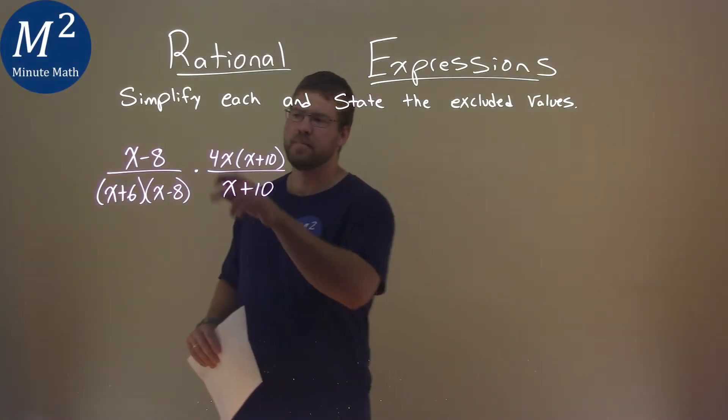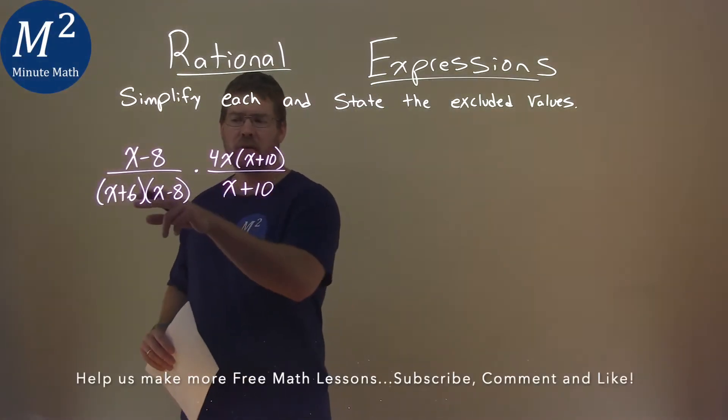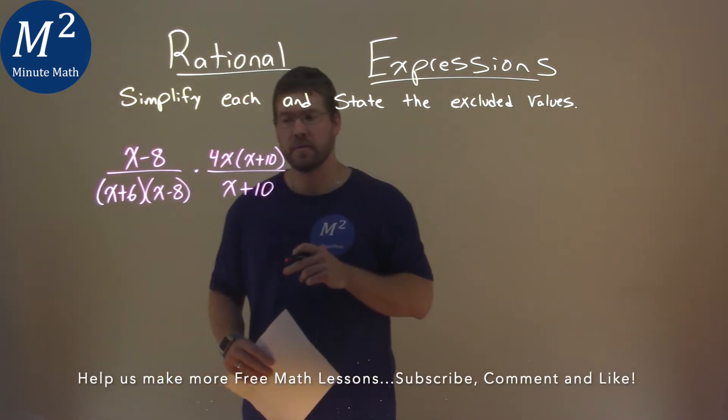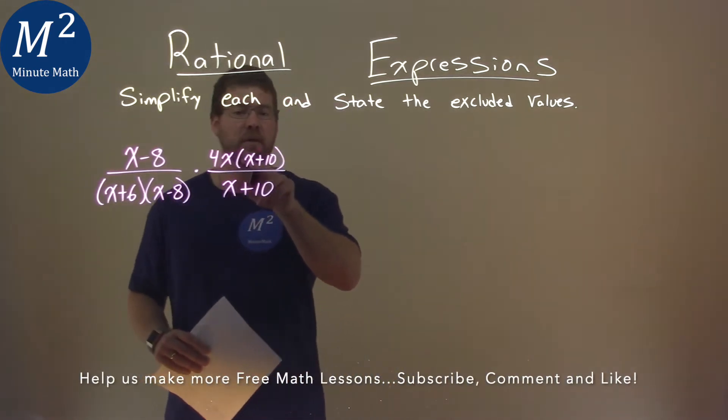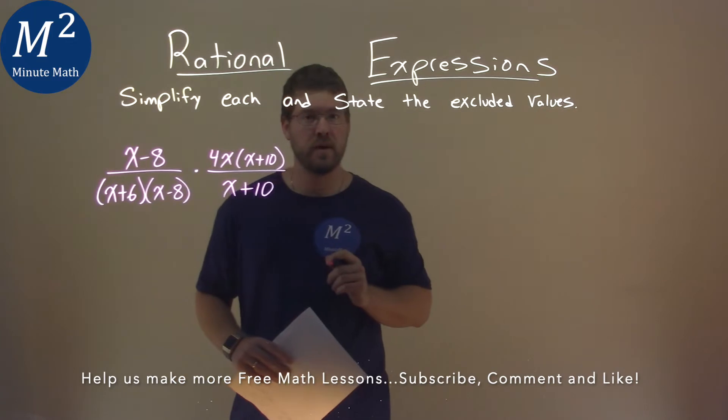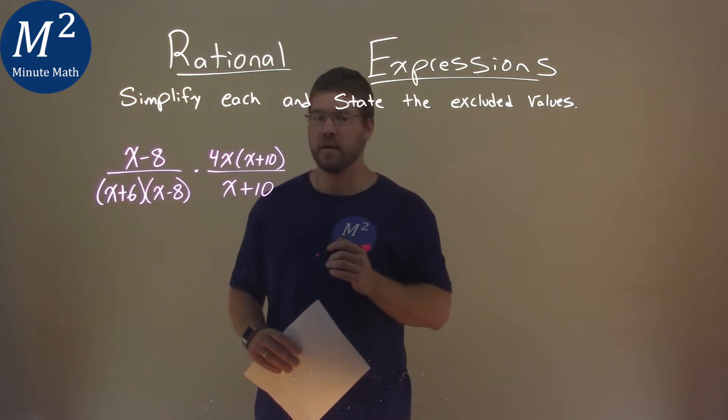We're given this problem right here: x minus 8 over x plus 6 times x minus 8 times 4x times x plus 10 over x plus 10, and we have to simplify this and state the excluded values.